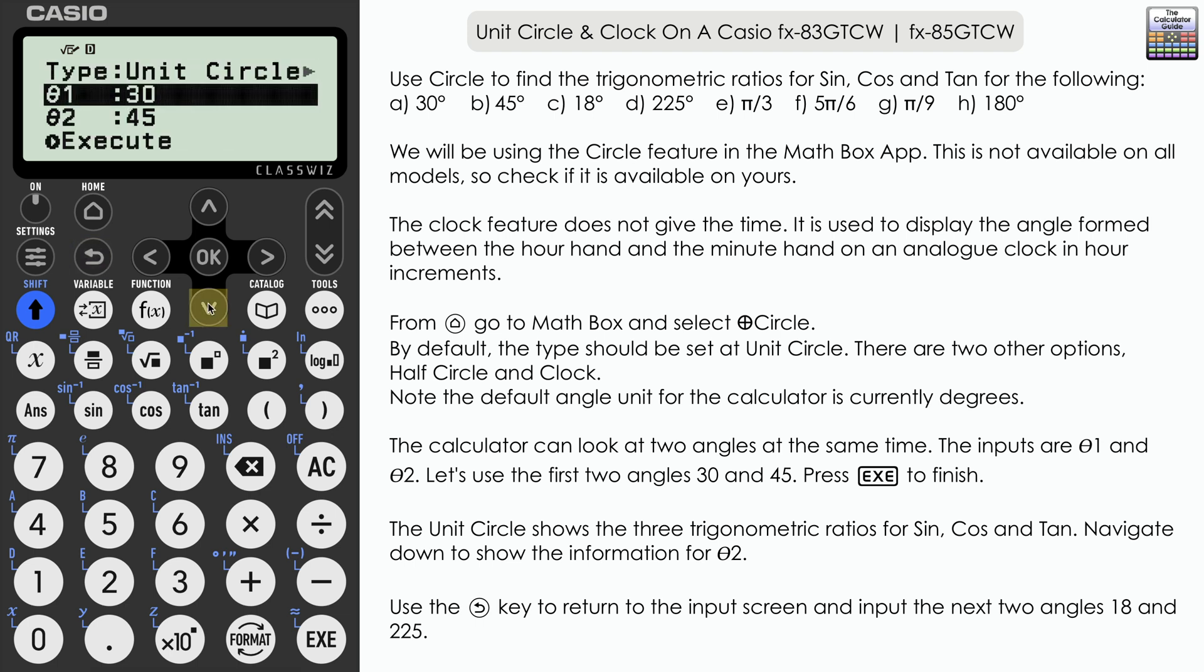Press the return key to go back to the input screen. Let's try two other angles. This time I'm going to try an angle without exact results. I'm going to input a theta 1 of 18 and a theta 2 which is greater than 180, so 225. Press execute once we're done.